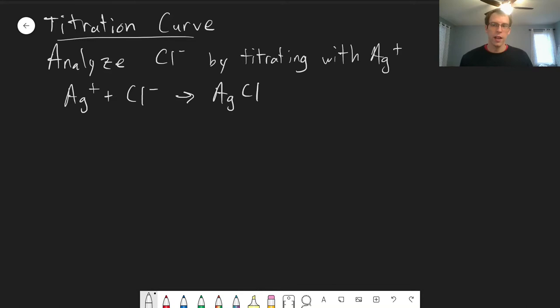As an example of a titration curve and looking at these different regions, let's look at an example of a precipitation titration. Precipitation titration is sort of the opposite of a solubility product.